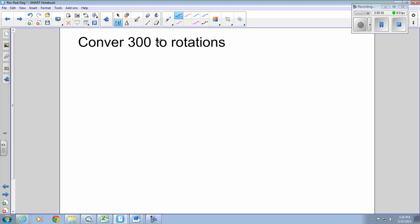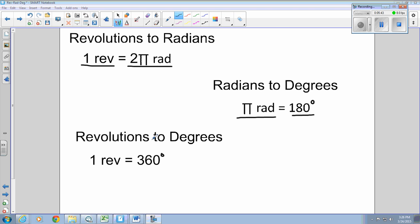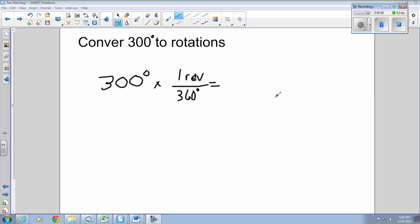Convert 300 degrees to rotations. Rotations, you know, we can call revolutions. Rotations, revolutions. Same thing. So, 360 degrees is one rotation and one revolution. Therefore, 300 divided by 360 is going to get you 0.833 revolutions.